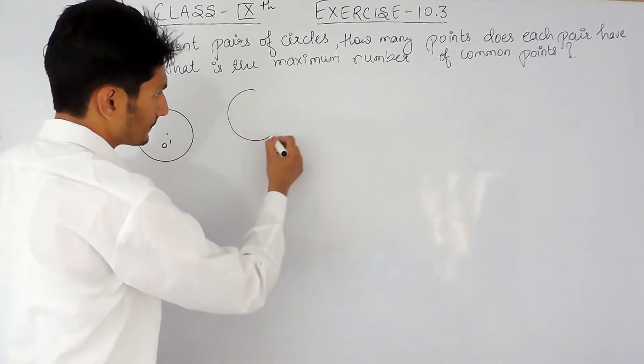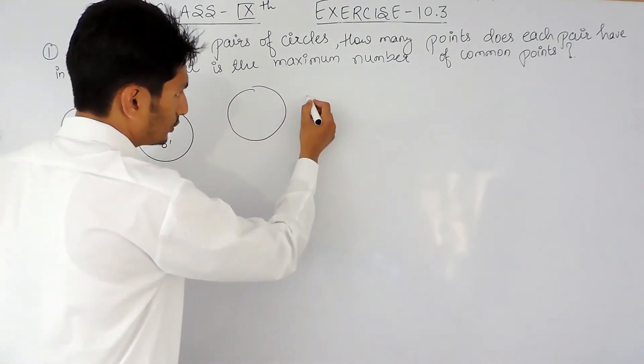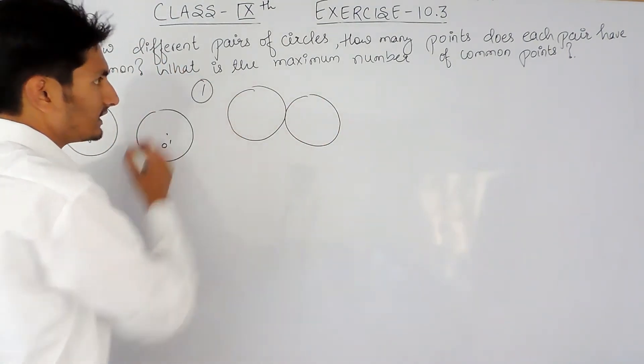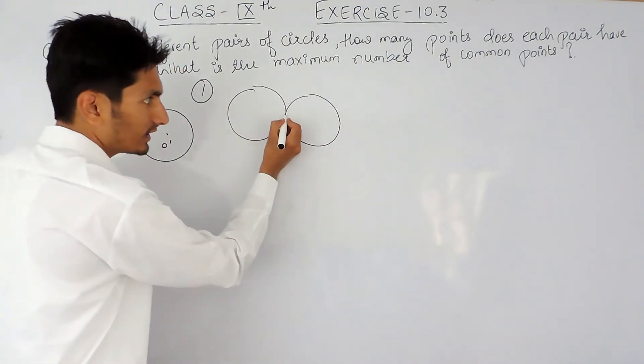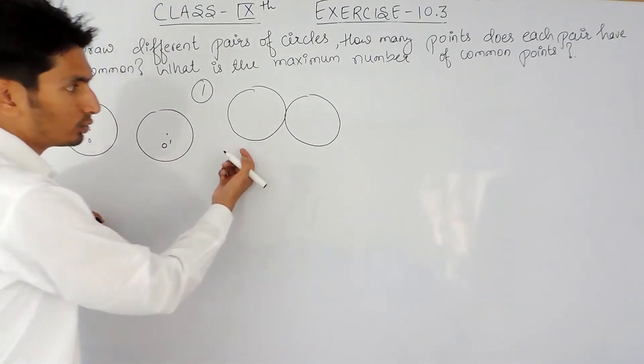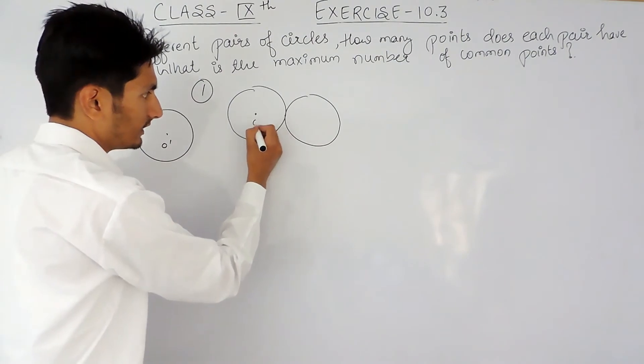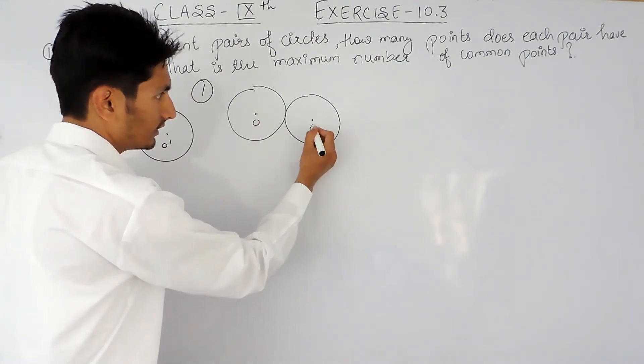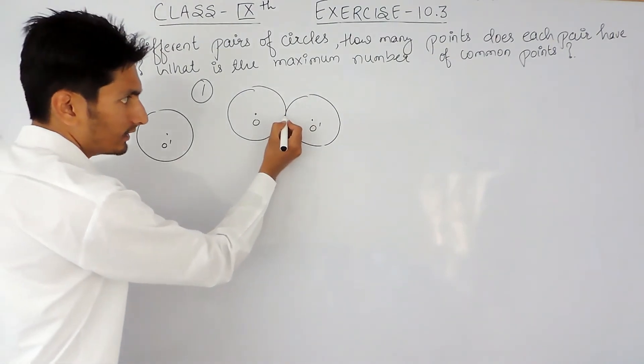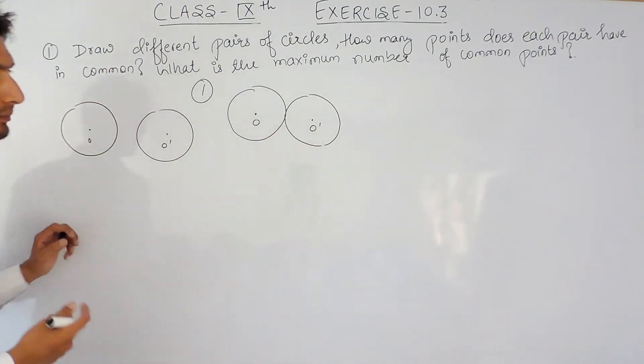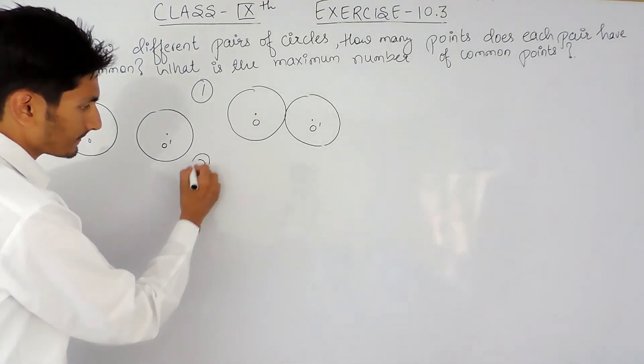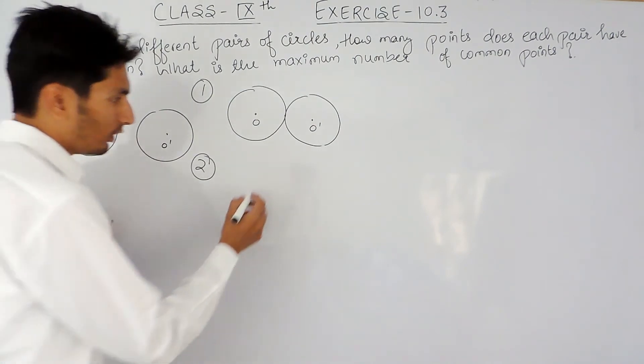So the first case is when two circles touch each other externally. Obviously here the number of common points is one. Similarly, in the second case they can also...